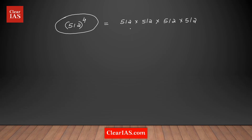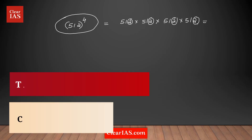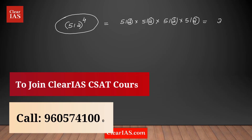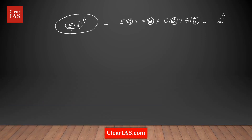Remember, the unit digit of the product is only based on the unit digit of the numbers you are multiplying. So the unit digit of this entire product is only based on the unit digits of the factors — that is, it is based on the 2 in 512. So the unit digit of the final product is the same as 2 to the power 4. The 5 and 1 are not affecting the unit digit of the product; only the 2 is.